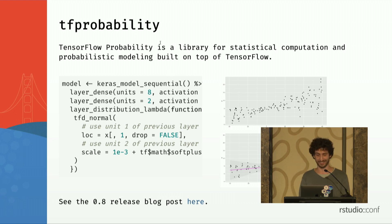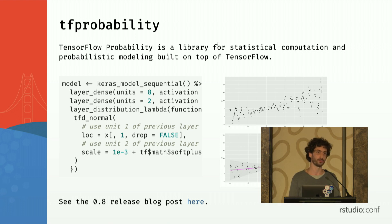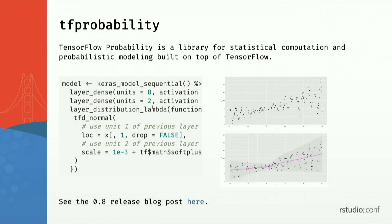Another cool new package is tf.probability, which provides a lot of statistical computation and probabilistic functions. It's built on top of TensorFlow, providing GPU, CPU, and even TPU implementations for most things. A key feature is the layer_distribution function that you can plug into your Keras model as a normal Keras layer. Instead of predicting a single value for each observation, you can predict a normal distribution, allowing you to calculate standard deviation and more. This opens a great scope for deep learning. You can see more in the release blog post linked here.